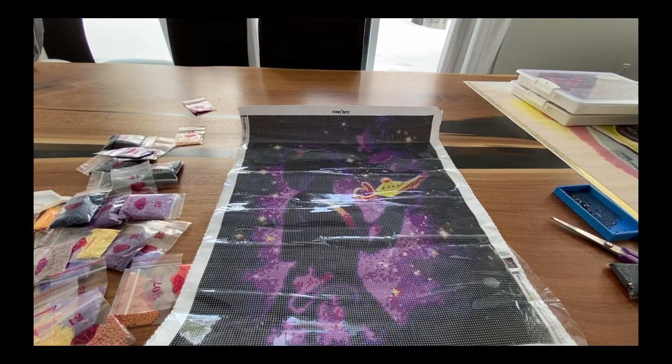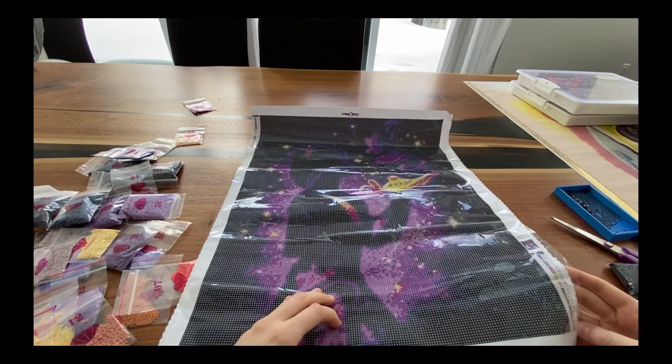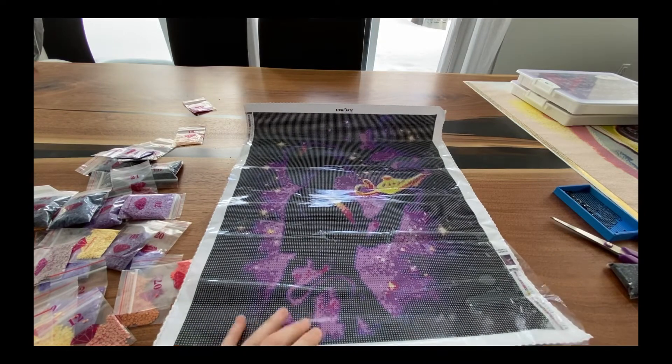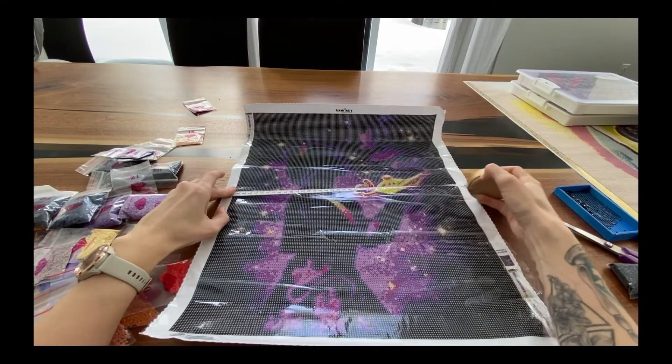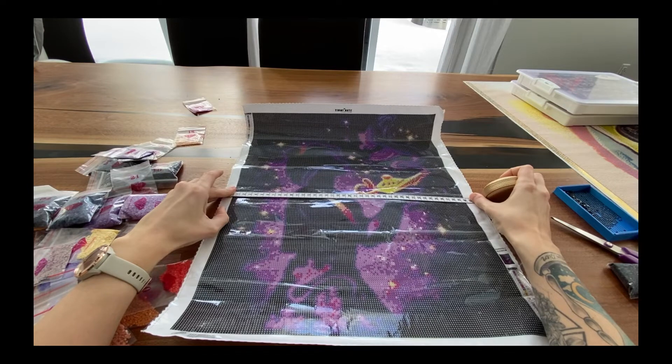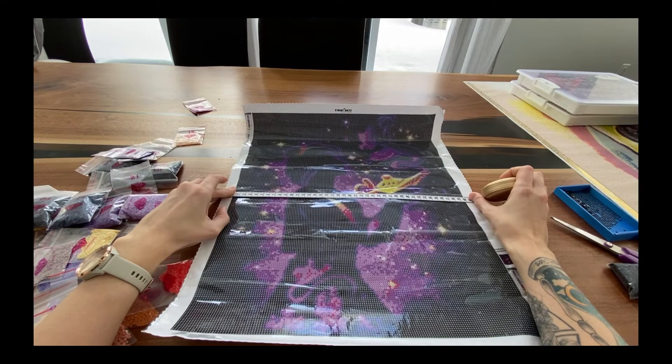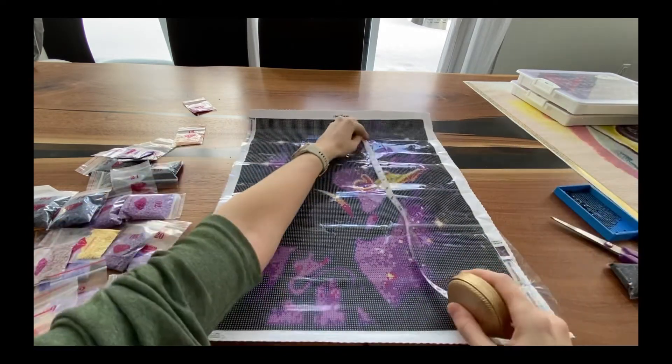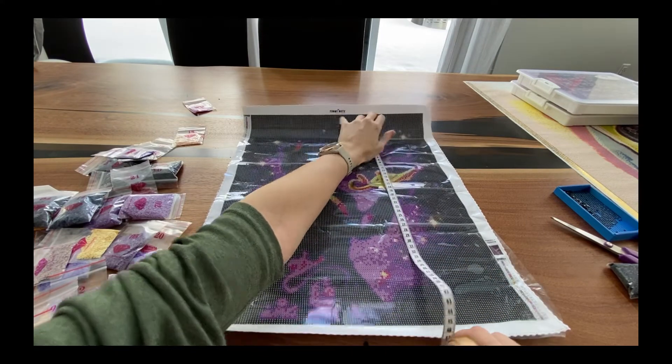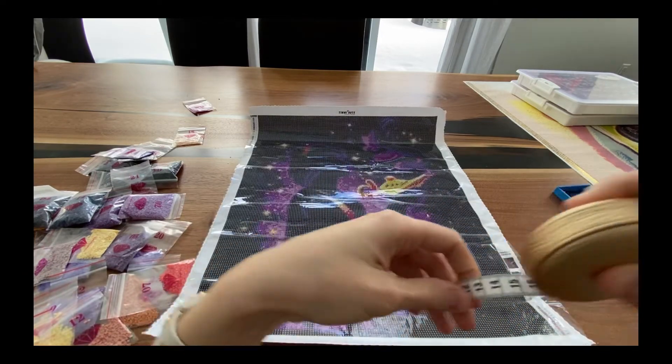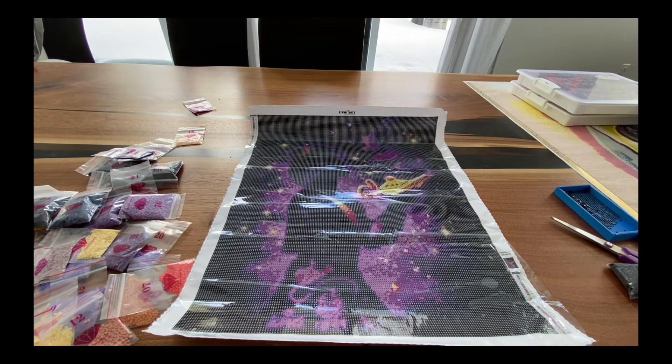Fait qu'elle était partie avec mon 823. La petite coquine. On va juste regarder la grandeur de la toile, si elle est vraiment véridique, comme on avait demandé. Vous voyez, ce n'est pas tout à fait 40. C'est, mettons, 39 et trois quarts par 49. Ça fait que, légèrement plus petit que ce qui est affiché, que ce qu'on avait demandé, mais pour le si peu de différence, on va dire que c'était ça.